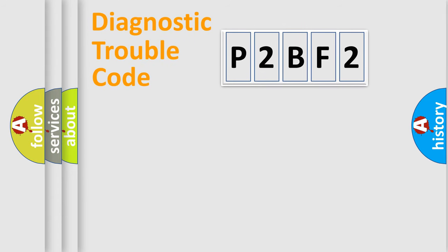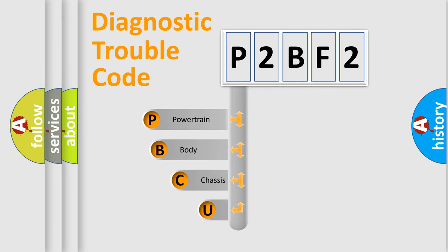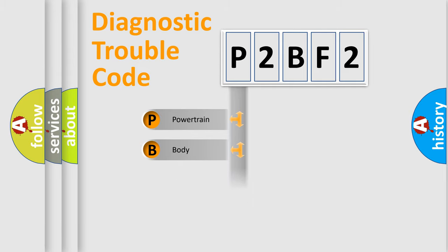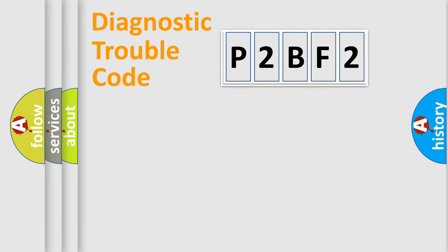Let's do this. First, let's look at the history of diagnostic fault code composition according to the OBD2 protocol, which is unified for all automakers since 2000. We divide the electric system of automobile into four basic units: Powertrain, Body, Chassis, and Network.